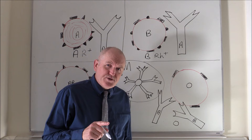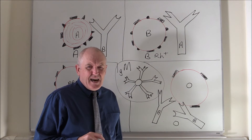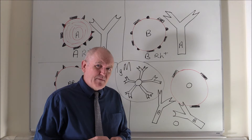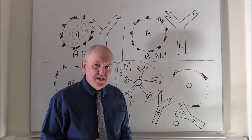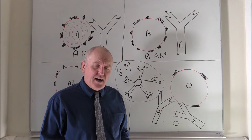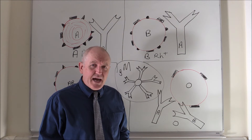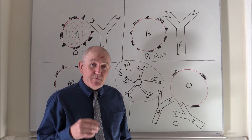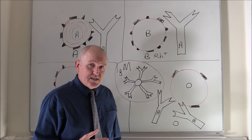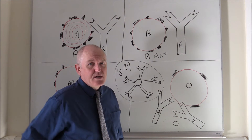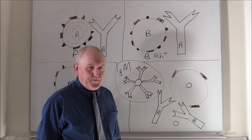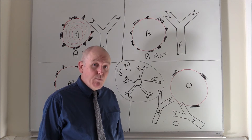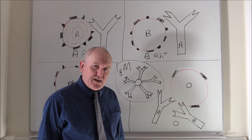Now, blood groups are quite a bit more complicated than this. In fact, the last time I read anything about it, there were 35 different types of blood groups which had been identified. But the ABO and D — or the ABO rhesus — are the immunologically most significant ones to be taken into account first for blood transfusion. But most transfusion laboratories will take into account more factors than just the ABO rhesus factor.